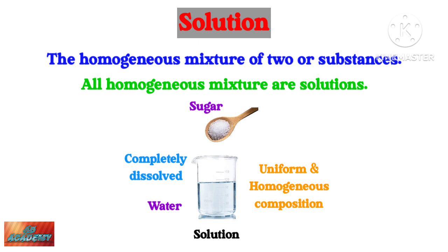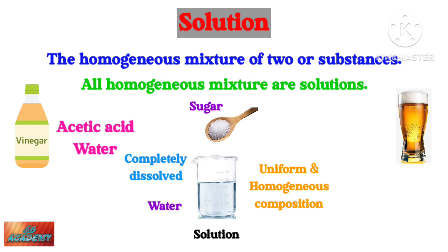Some other examples of solution are vinegar and alcohol. In vinegar, acetic acid dissolves in water and they form a uniform and homogeneous composition. Alcohol and water mix together to form a homogeneous mixture. Thus, remember: a mixture is said to be a solution if its particles form a homogeneous composition. In a solution, the particles are so small that we cannot spot them with the naked eye.